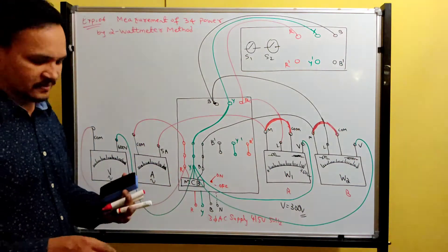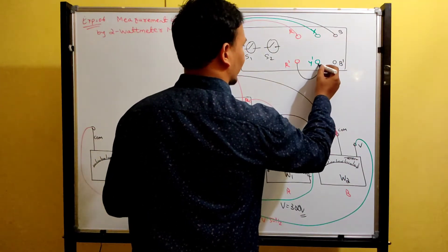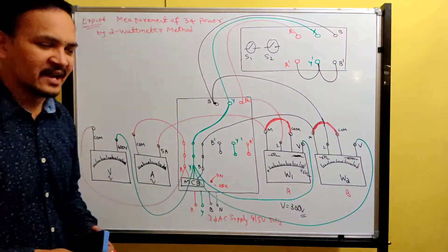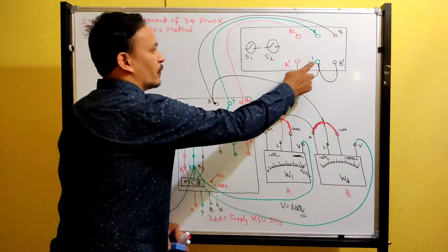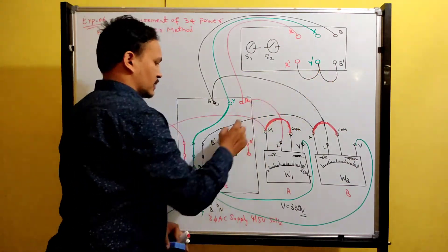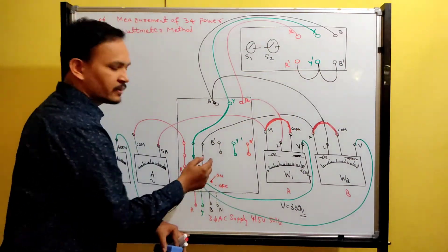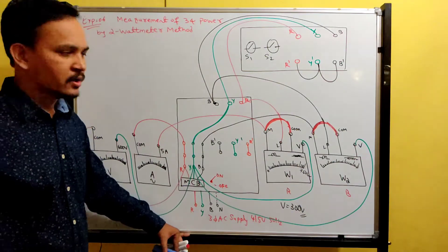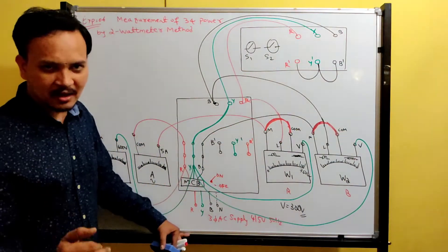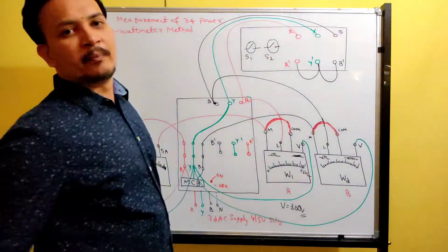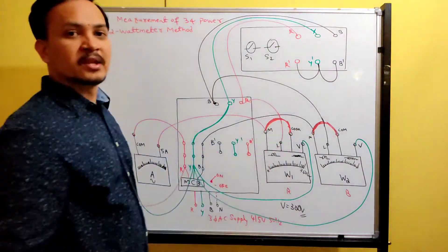Now for star connection: join R' connected to Y', Y' connected to B' — shorting all three bottom terminals together. You can do this directly on the lamp load bank: short R', Y', B' together and it becomes star connection.